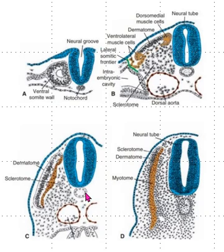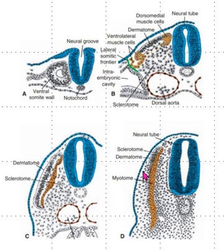The notochord remains as the nucleus pulposus of the intervertebral disc. So the final parts of the somite are the dermatome, myotome, and sclerotome. The dermatome forms the dermis of the skin, while the surface ectoderm forms the epidermis of the skin.